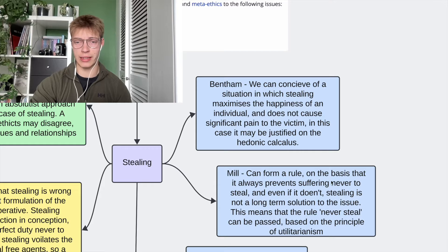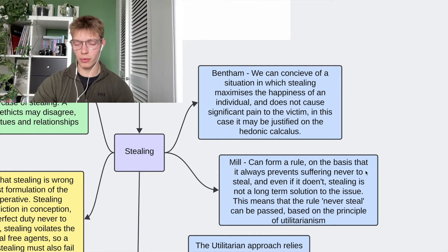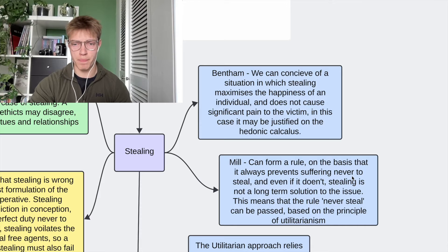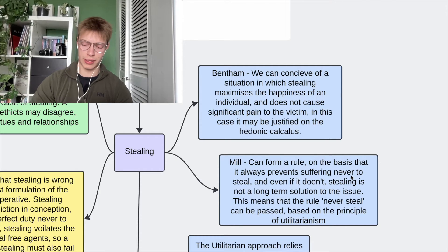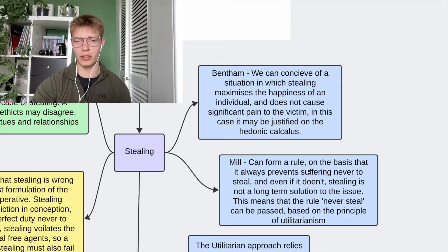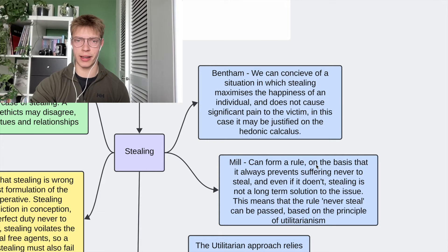For Mill's formulation, it's slightly different. We could form a rule never to steal, and this could be a hard rule or a soft, weak rule that is sometimes broken. That's because stealing almost always leads to suffering and will also create a society that isn't pleasurable to live in. So we can form a rule that suggests that stealing is wrong.